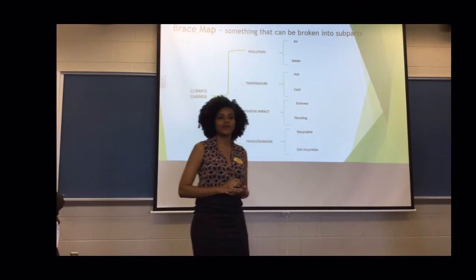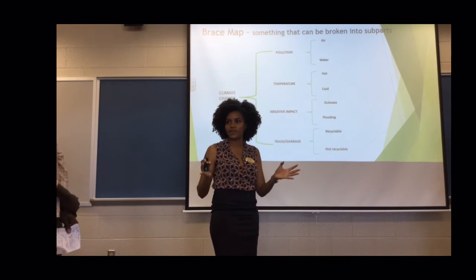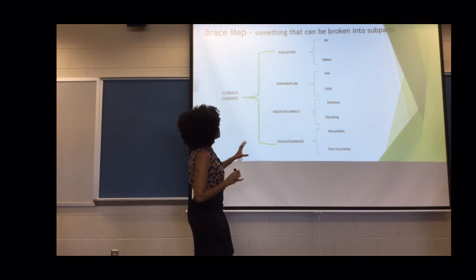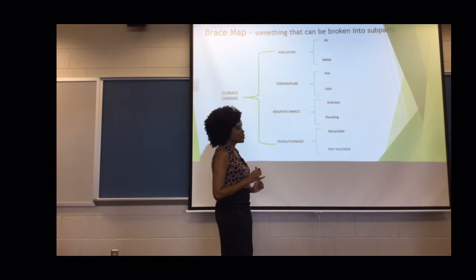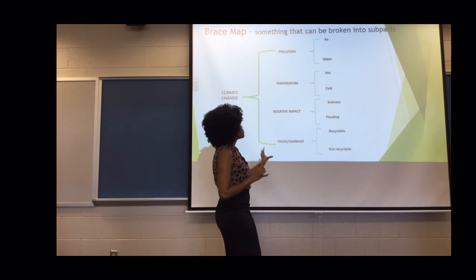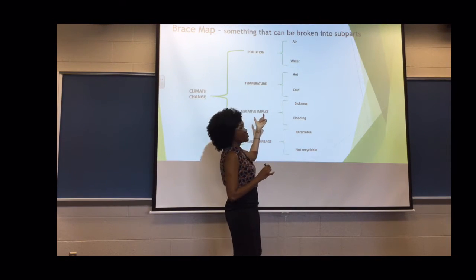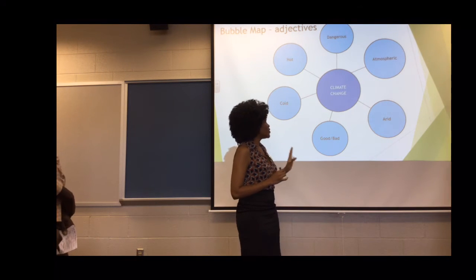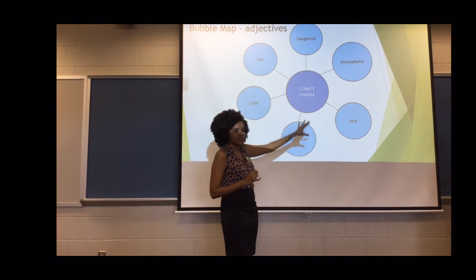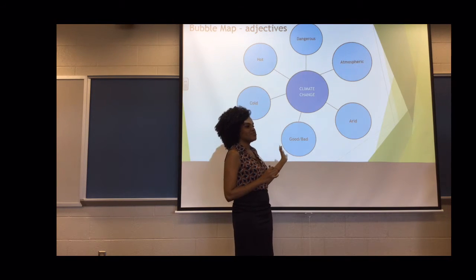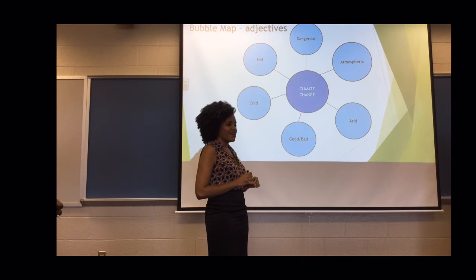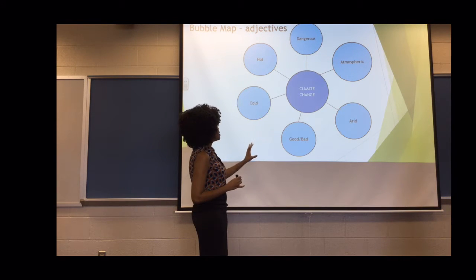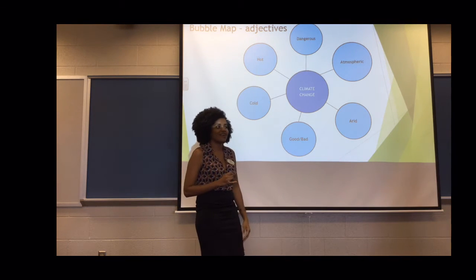Now we have the brace map. The brace map is used to identify the whole and part relationships — we literally break things apart. We divided this topic into four subtopics: pollution, temperature, negative impact, and trash and garbage. From these subtopics, we came up with two other subtopics related to the topic. Now, the bubble map — in the bubble map we have the main idea, and then we use adjectives to describe this main idea. Which ideas can you add? We have methane pollution, melting ice, unpredictable storms. All these things we can add to our bubble map. Remember, we always use adjectives to describe this idea.